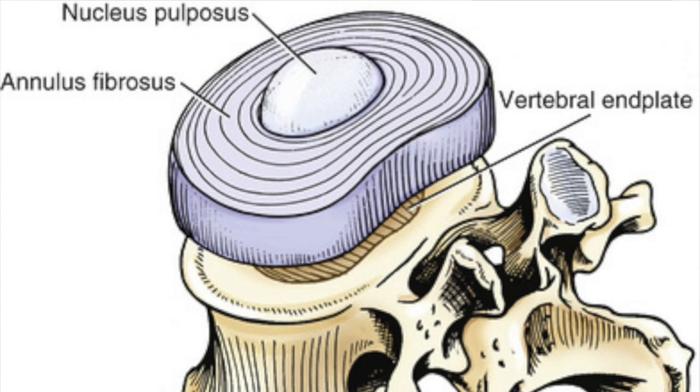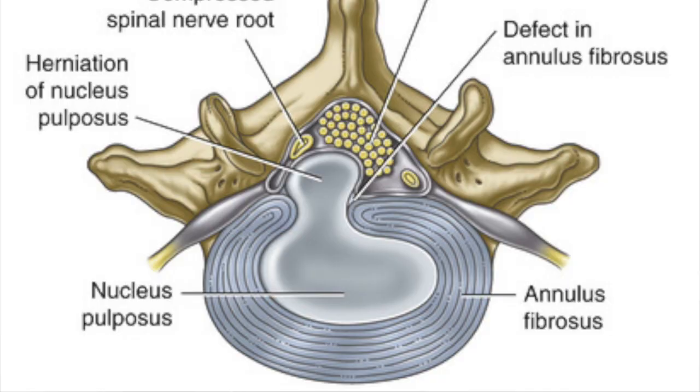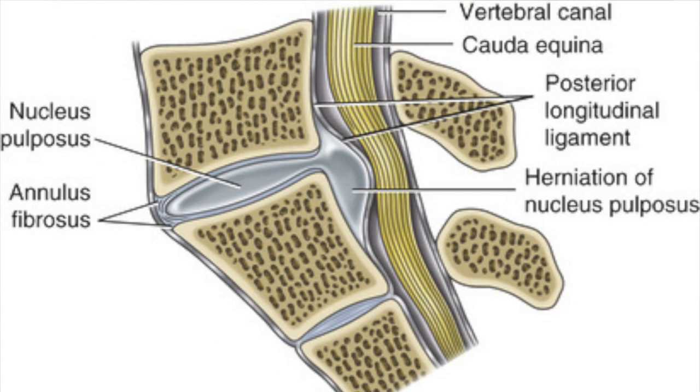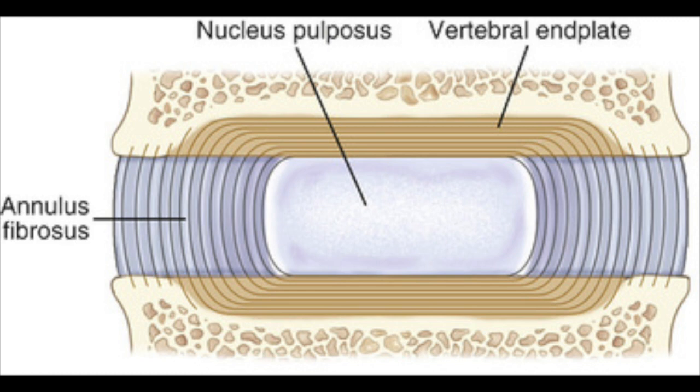On the very outer layer of a disc is dense, tough, fibrous tissue called the annulus fibrosis. In the middle of that, we have what is called a nucleus pulposus — that is more of a fluid or even a gel-like substance. That is the part that can herniate, and when it does herniate, it is usually the cause of someone's low back pain. Sandwiched above and below that nucleus pulposus, we have a cartilage material called an end plate.